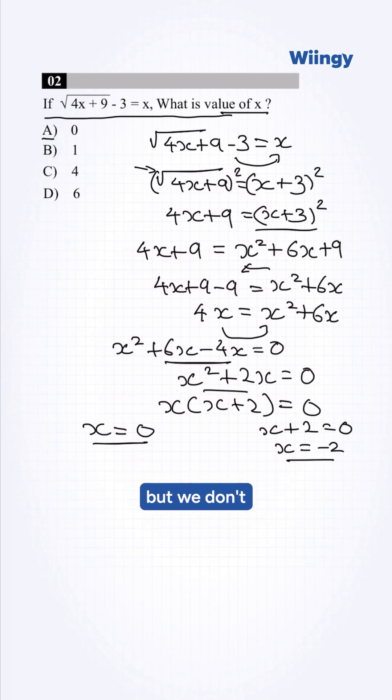We have A as 0, but we don't have -2 in the options. A is our correct answer.